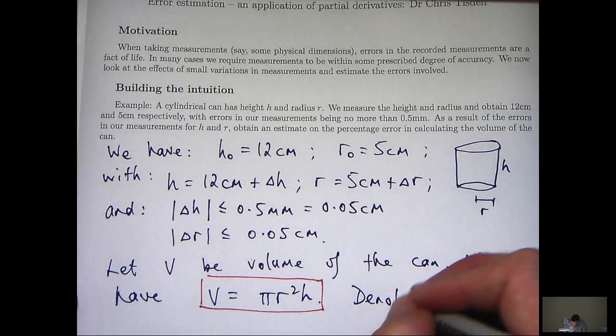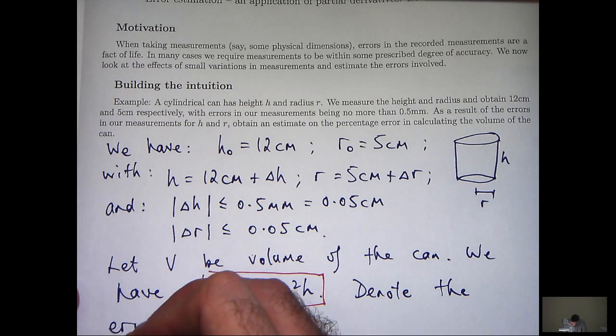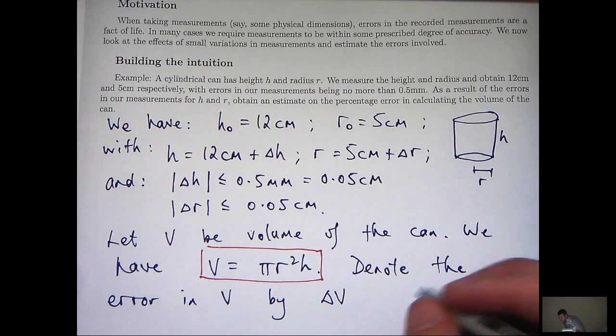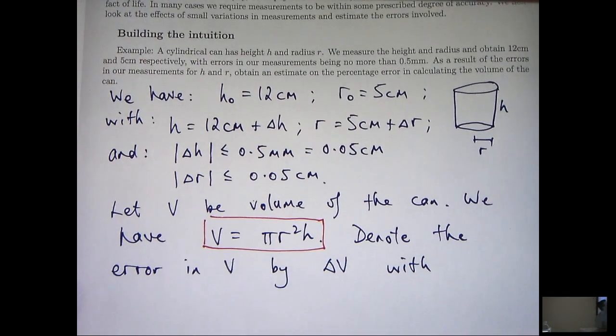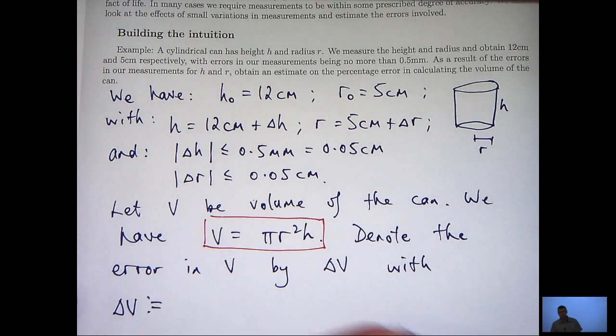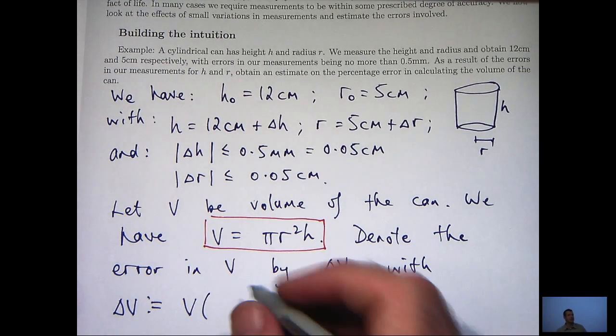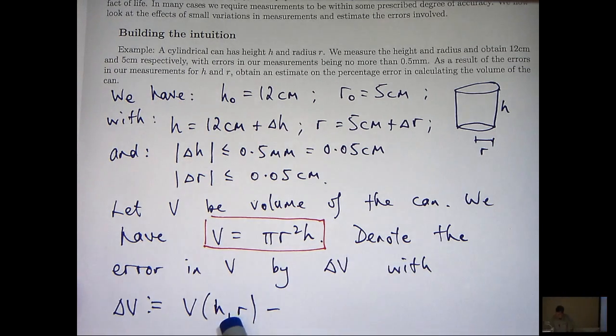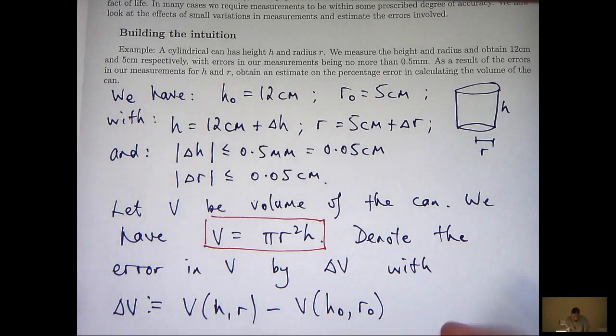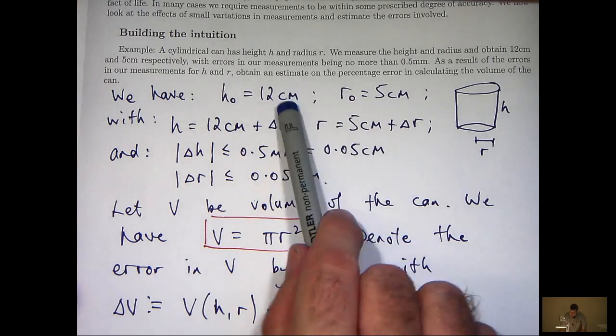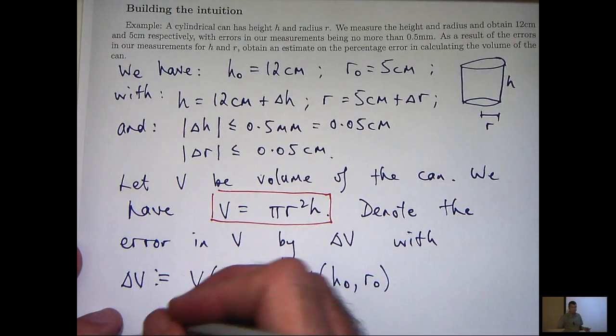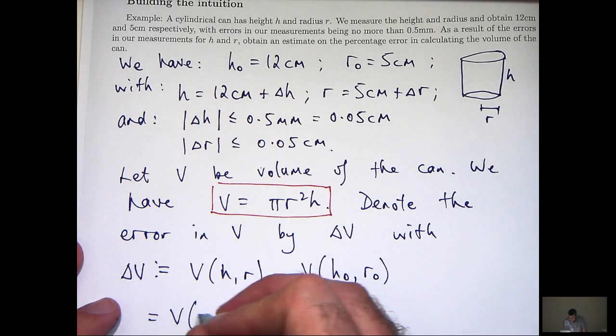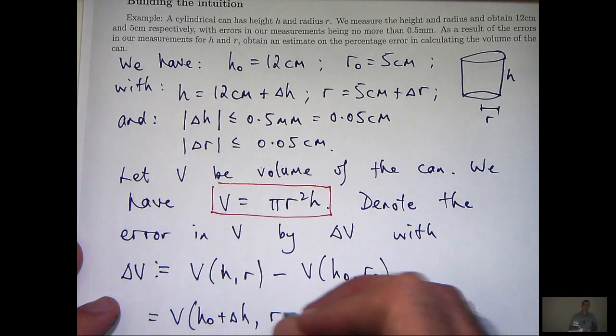Let's denote the error in V by delta V with delta V defined in the way that you would expect. It's basically the true volume of the can, V at h and r, minus our computed volume of the can based on these measurements. Essentially, it's the following: just by substituting h with h0 plus delta h.